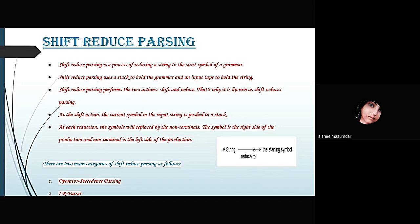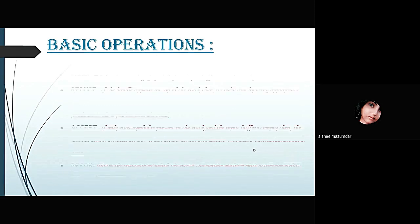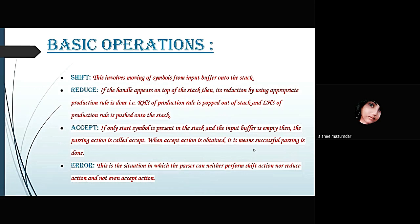The basic operations of shift-reduce Parsing include four operations: shift, reduce, accept, and error. Shift involves moving symbols from the input buffer onto the stack. Reduce: if the handle appears on the top of the stack, then its reduction using an appropriate production rule is done — the right-hand side of the production rule is popped out of the stack and the left-hand side is pushed onto the stack. Accept: if only the start symbol is present in the stack and the input buffer is empty, then the parsing action is called accept, meaning successful parsing is done. Error: the situation in which the parser can neither perform shift action nor reduce action nor accept action.